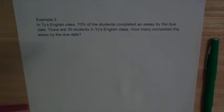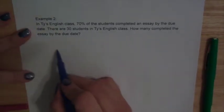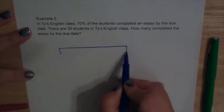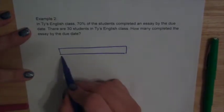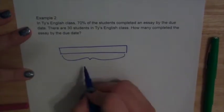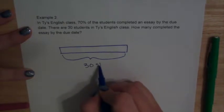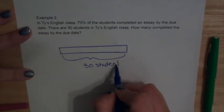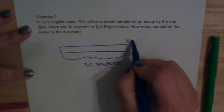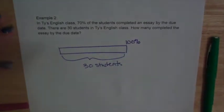So for this one, we're going to start again with our line, which represents the students in Ty's class, which in our problem tells us that is 30 students. And if we have all of those students, that equals 100%.